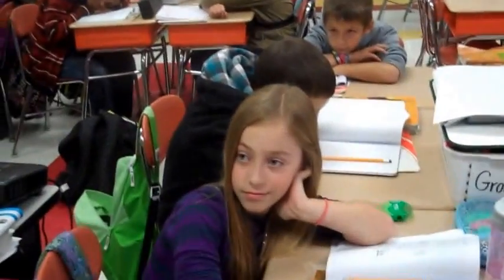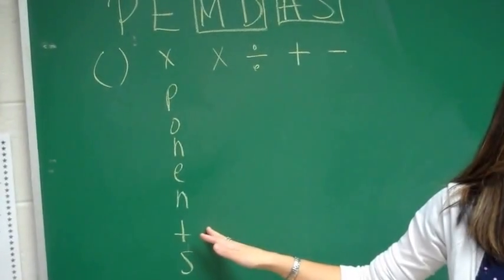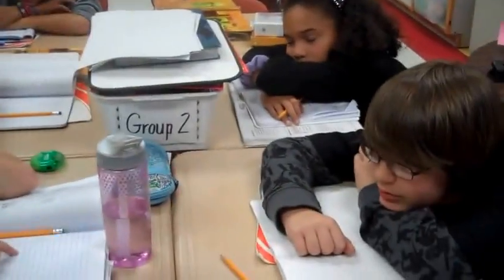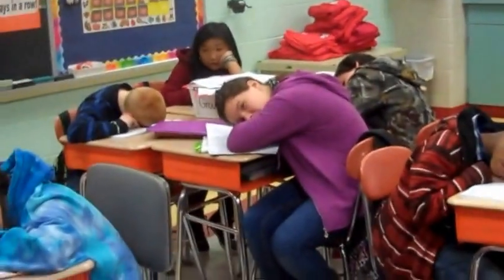Today we are reviewing order of operations. In order of operations, we use something called PEMDAS. P stands for parentheses. After we do parentheses, we move on to E for exponents. After that, we do multiplication or division from left to right. And then finally, we look to see if there's addition or subtraction from left to right.